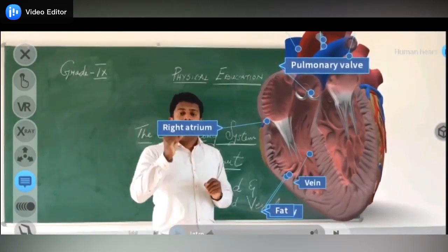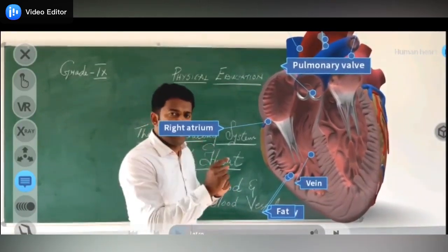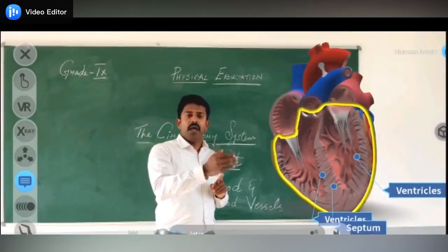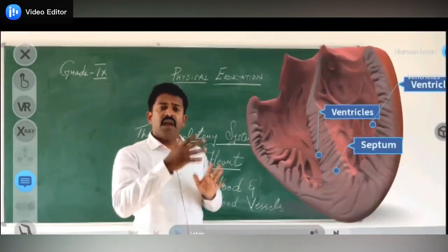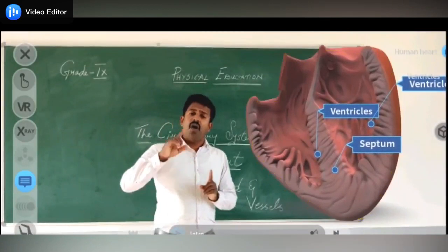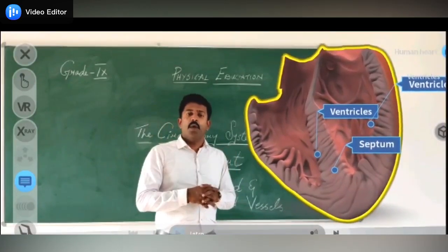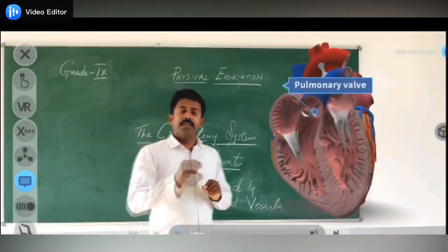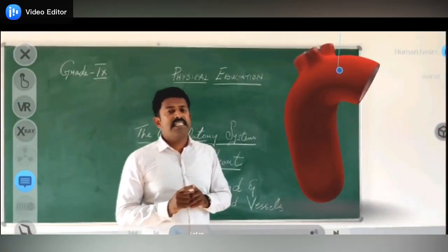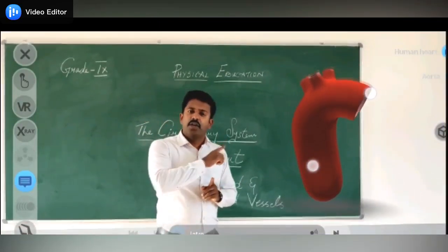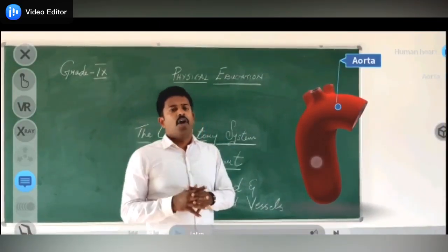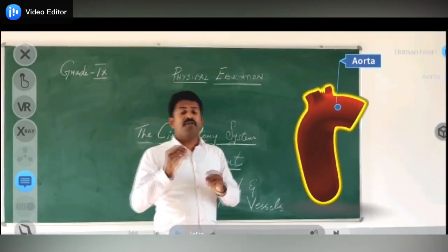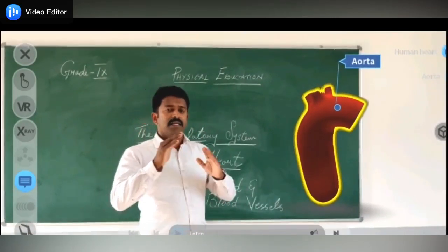The bicuspid valve opens and the purified oxygenated blood goes to the last chamber — the left ventricle. From the left ventricle, with the help of the aorta, the oxygenated blood is circulated to all parts of the body. This is all about the mechanism of blood circulation in the heart.